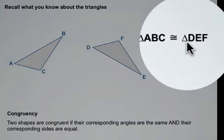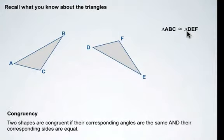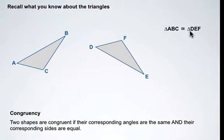That would mean that all of the angles, all of the corresponding angles in both triangles, and the corresponding sides would have to be equal.